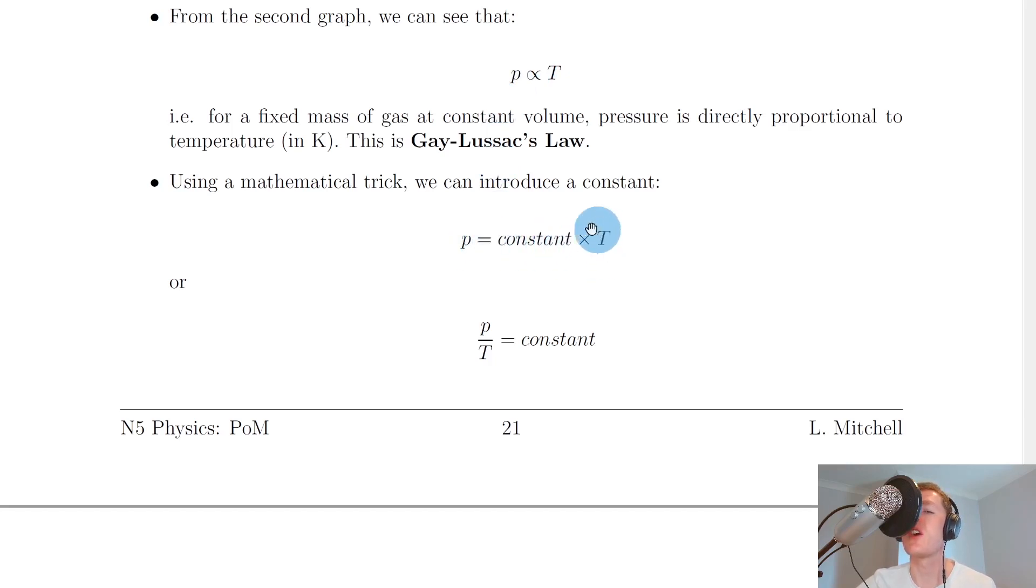Now to get the constant on the right hand side, we can divide both sides by T to get P over T equals a constant. So this means whenever we take our pressure value and we divide it by a temperature value, we should get a constant value.